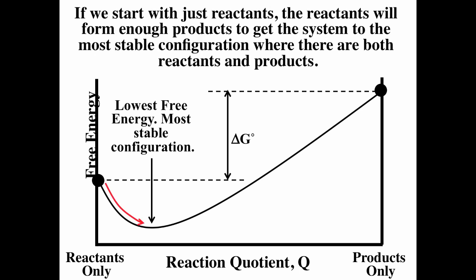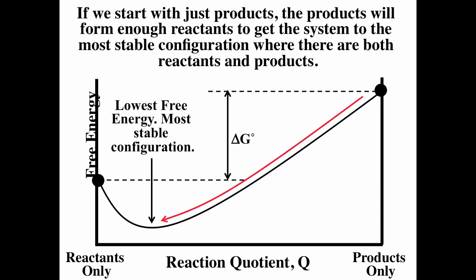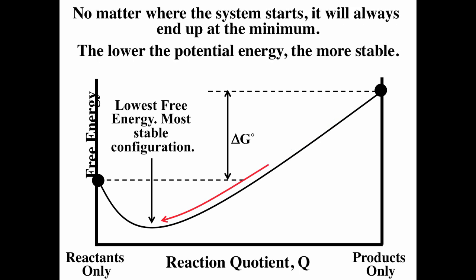If we start with all reactants, we eventually reach the position of lowest free energy — the most stable configuration. We do not know how fast this will occur; we just know it will eventually get there. The same applies if we start with all products or somewhere in the middle. Thermodynamics is different from kinetics: kinetics is about rates, thermodynamics is not.